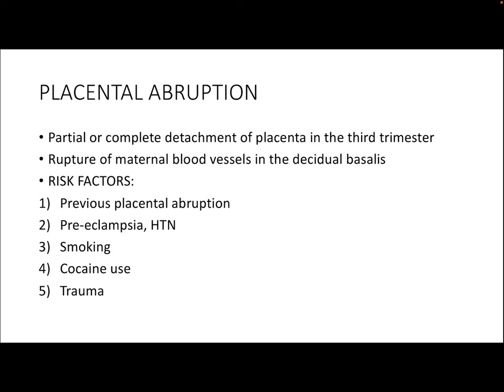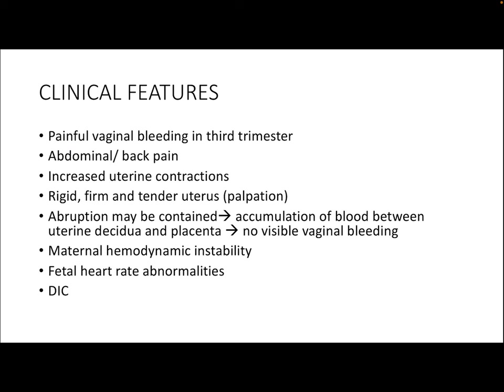The next topic is placental abruption. Placental abruption is a partial or complete detachment of the placenta that occurs in the third trimester, involving rupture of maternal blood vessels in the decidua basalis. Common risk factors include a previous placental abruption, preeclampsia, hypertension, smoking, cocaine abuse, and trauma. In abruption, the ruptured vessel could be either an artery or a vein, and the clinical features differ depending on which vessel is affected.